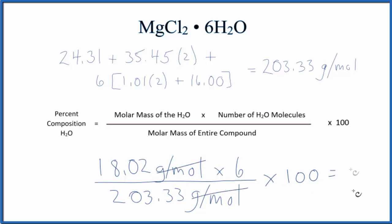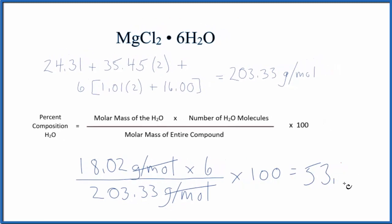We end up with 53.17%. What this number means is if we have a mass of magnesium chloride hexahydrate, 53.17% will be the mass of the water in this compound.